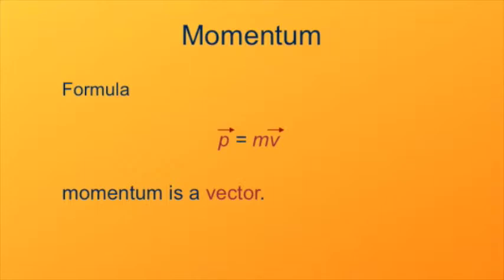Units for momentum are mass times velocity, so that would be kilogram meters per second. Even though momentum is a very important quantity in physics, one of the most important quantities, perhaps second only to energy, we don't have any specific name for the unit for momentum. It's just kilogram meters per second.